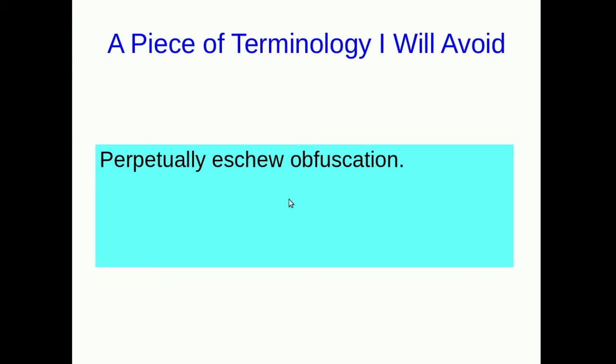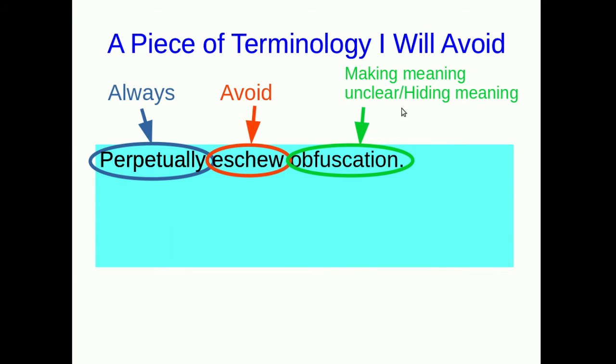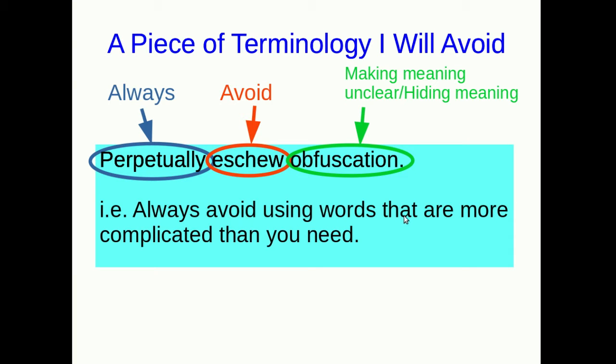And so as a general principle we should perpetually eschew obfuscation, right? That's clear. Perpetually means always. Eschew means avoid. Obfuscation is making a meaning unclear or hiding the meaning. So in other words we should always avoid using words that are more complicated than we need.